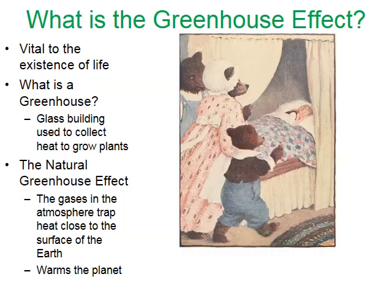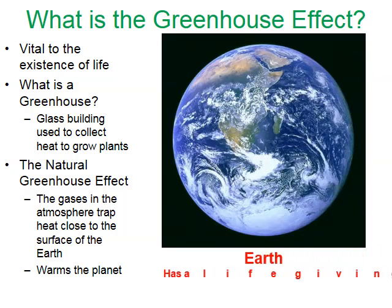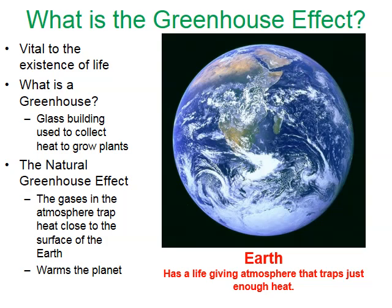To finish off our Goldilocks analogy — this porridge is just right. There's a planet in the solar system that's just right for life, and of course I'm referring to Earth. Earth has a life-giving atmosphere that traps just enough heat. So what's the problem? The natural greenhouse effect is out of balance, and that's what this video is going to discuss.